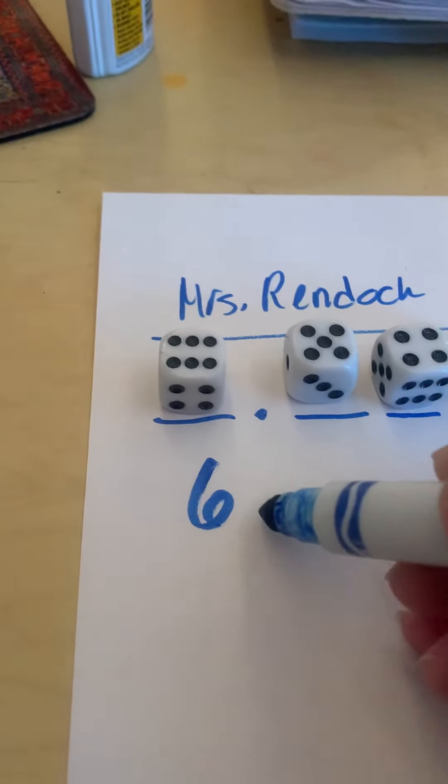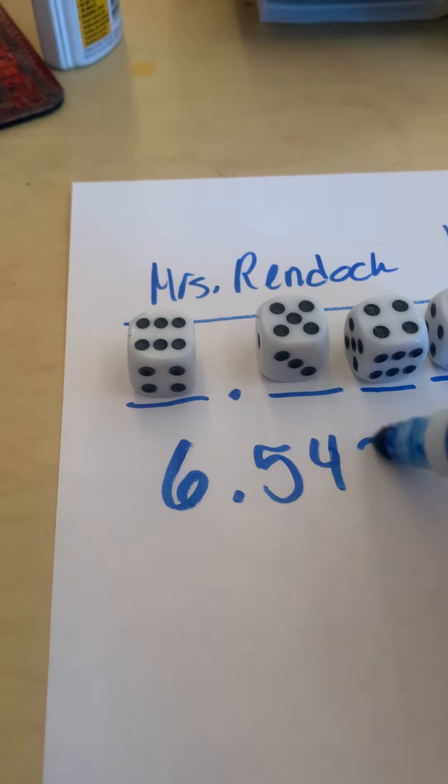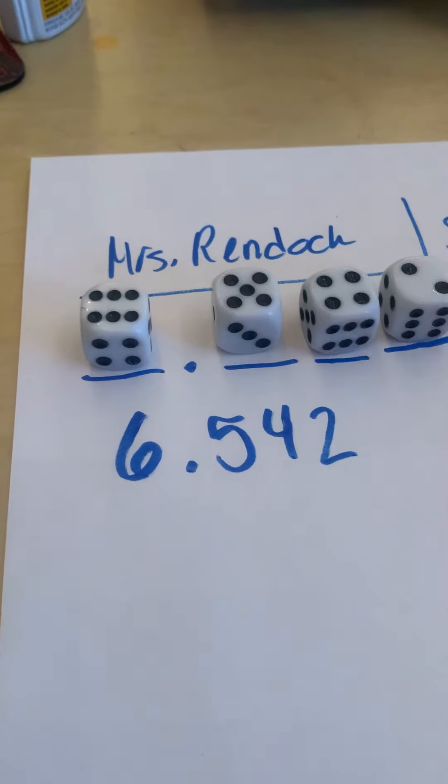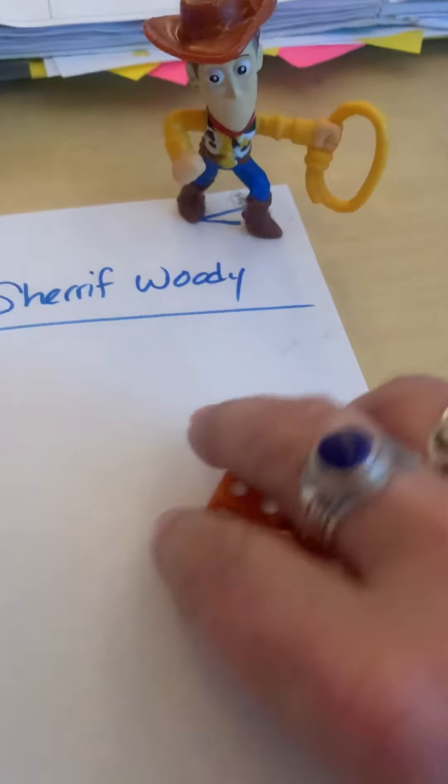So I've just created the decimal six and five hundred forty-two thousandths. That's a pretty good size decimal. Okay, Sheriff Woody, it's your turn.